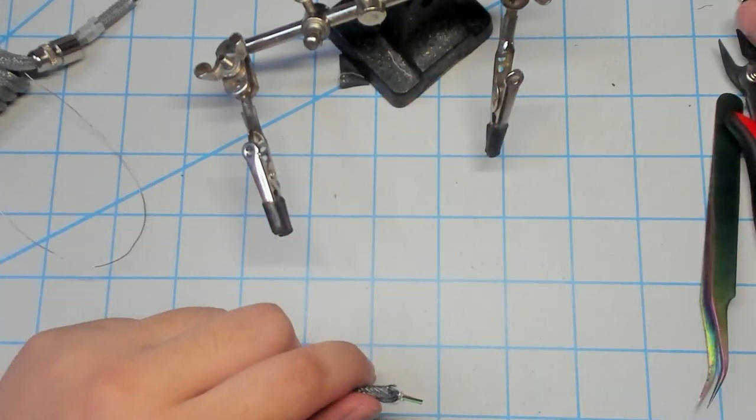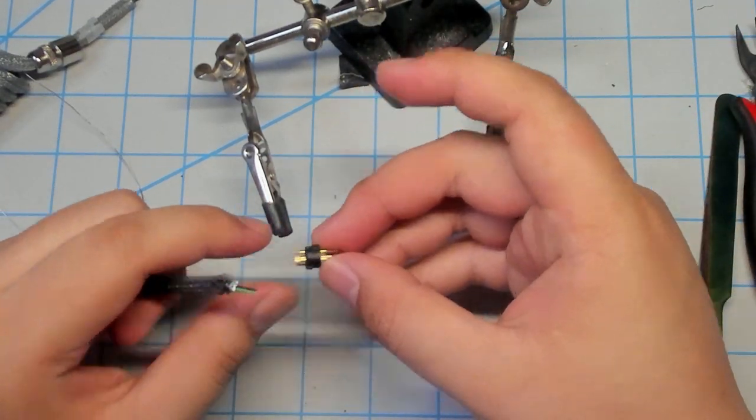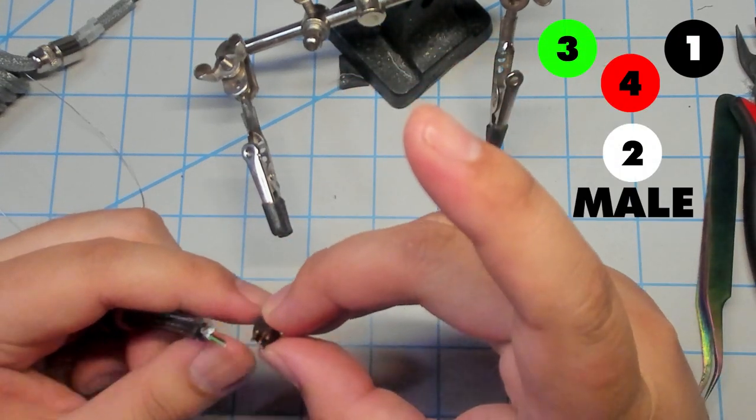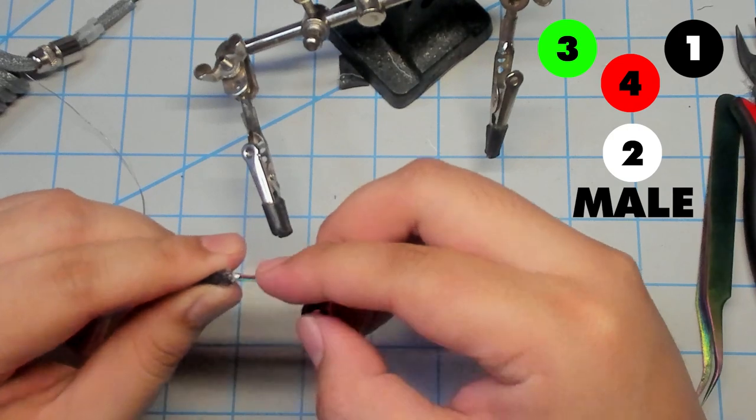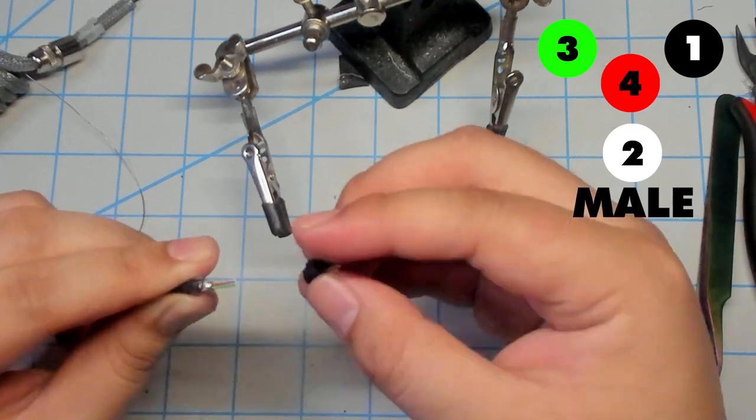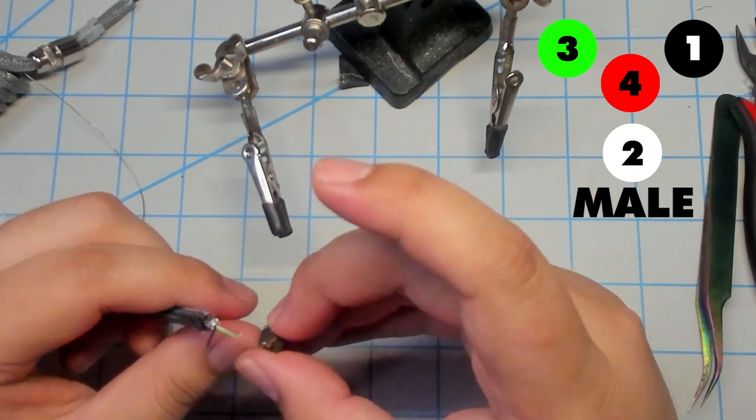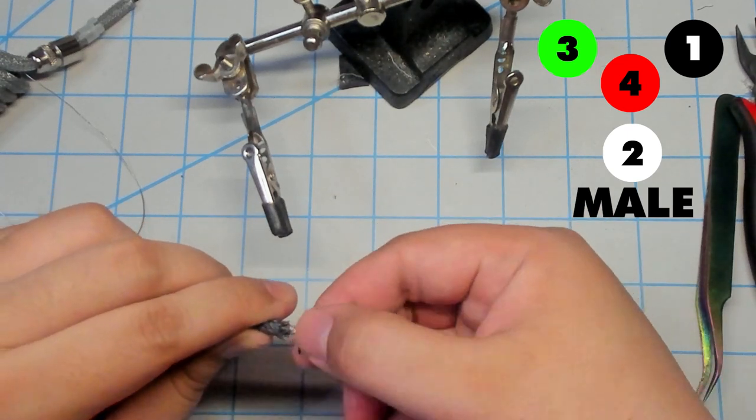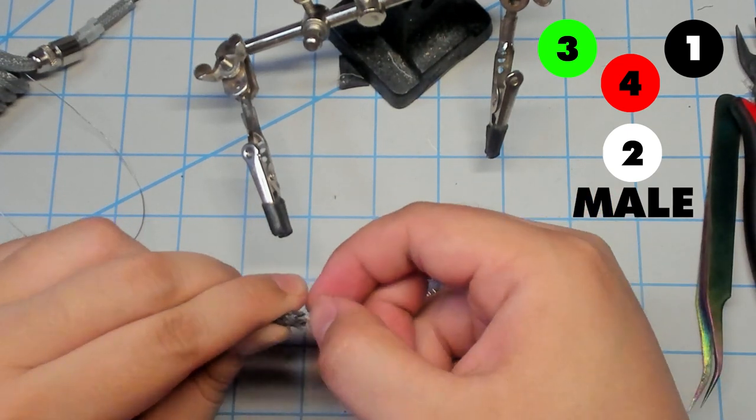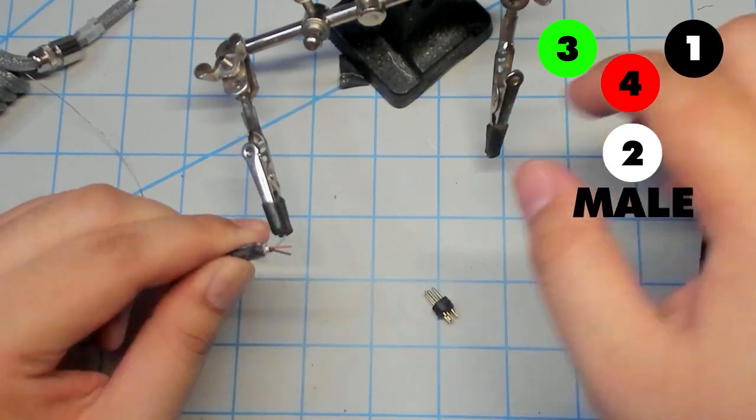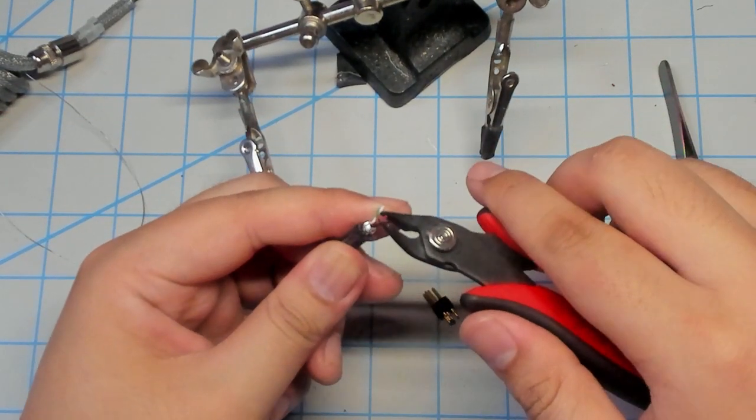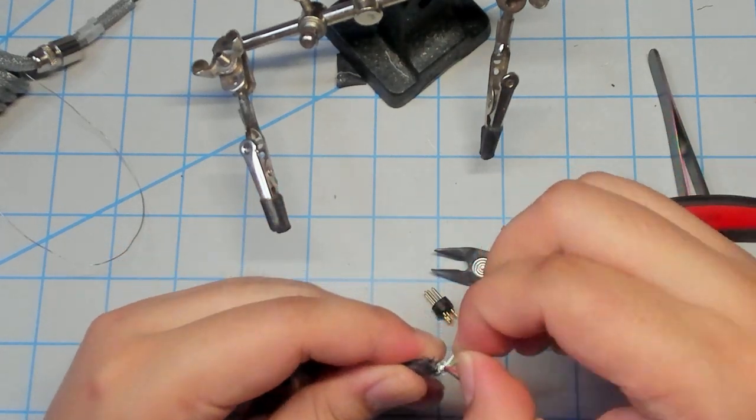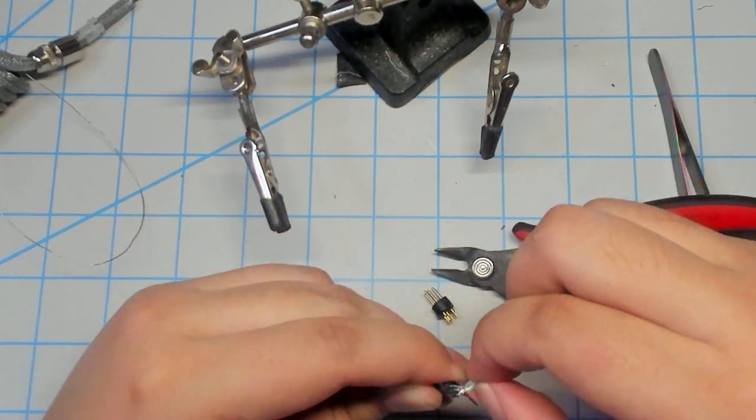Here I'm getting ready to solder the male end that we'll be adding to the longer part of the cable. You'll see here that I'll be arranging the wires in the configuration I'll be soldering them in. I'll slightly trim all of the wires except for the second pin at the bottom to make soldering a little easier for myself. Then I'll go ahead and strip a little part of each wire.